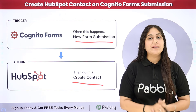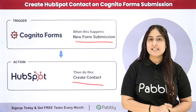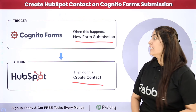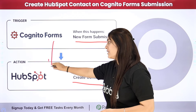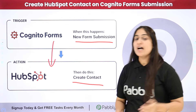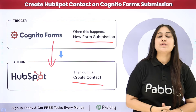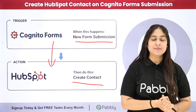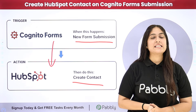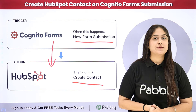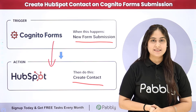To automate this entire process, I need to connect my Cognito Forms with my HubSpot CRM account using an automation software named Pabbly Connect. To learn this process step by step, let me take you to my screen.